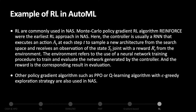RL is commonly used in NAS. Monte Carlo policy gradient RL — the REINFORCE algorithm — was one of the earliest RL approaches in NAS. A controller, usually an RNN, executes an action A_t at each time step t to sample a new architecture from the search space, then receives observation of state S_t and reward R_t from the environment. The environment refers to the neural network training procedure to train and evaluate the network generated by the controller, and the reward is the corresponding evaluation result. Other policy gradient algorithms such as PPO, or Q-learning with epsilon-greedy exploration, are also used in NAS.